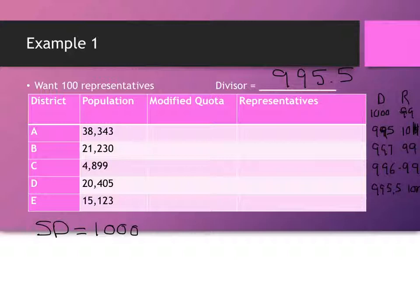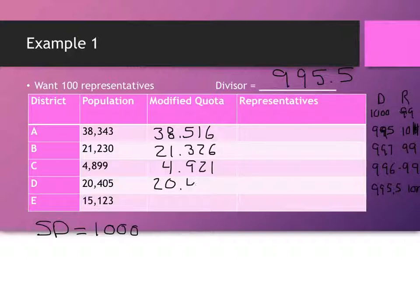And so with 995.5, your modified quotas are 38.516, 21.326, 4.921, 20.497, and 15.191.